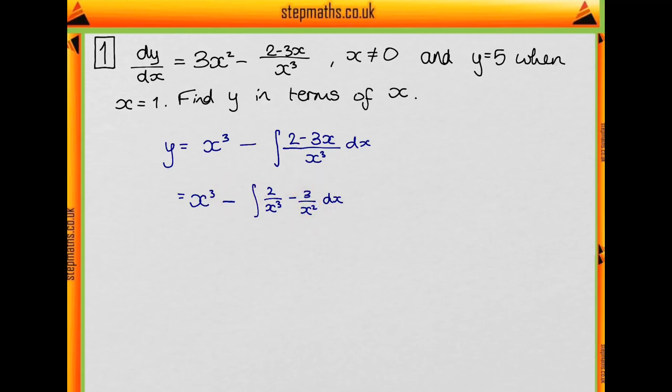Just be careful with your signs here. So I've kept the minus out here and when I integrate this we have a minus here so when we combine these we'll make a plus. So yes, the next step is going to be we keep this as it is. We're going to integrate 2/x³ so that's 2x to the minus 3. So we increase the power but because it's negative, minus 3 becomes minus 2 and then we divide by minus 2.